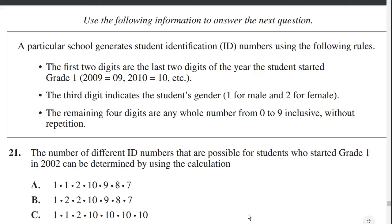A particular school generates student identification numbers using the following rules. The first two digits are the last two digits of the year the student started grade one — so 2009 gives 09, 2010 gives 10, etc. The third digit indicates the student's gender: one for male, two for female. The remaining four digits are any whole number from zero to nine inclusive without repetition — once a digit is used, it cannot be used again within those last four.